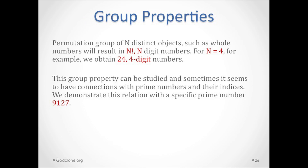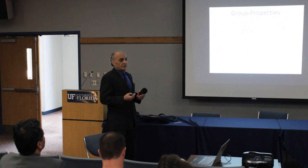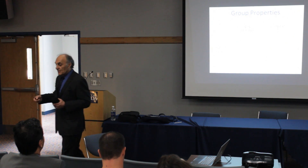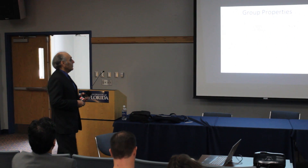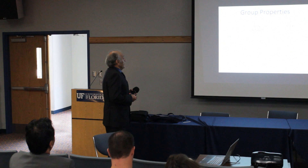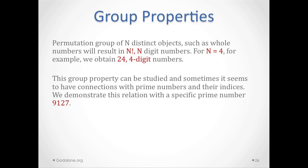Group properties: permutation group properties on distinct objects such as whole numbers result in n factorial. That exclamation mark means n factorial. For n equal to 4, we have 24 four-digit numbers, because n factorial means 1 times 2 times 3 times 4, which is 24.